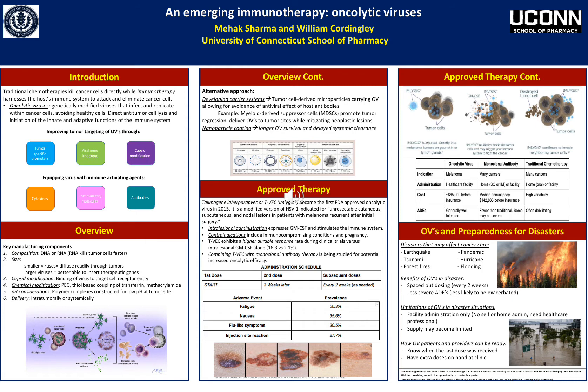Another parameter when creating oncolytic viruses is capsid modification, which helps with the binding of the virus to the target cell receptor entry. We also look at chemical modification, which can be utilized through things like polyethylene glycol, ethyl-based coupling of transferrin, and methacrylamide. We also look into pH considerations, since the polymer complexes are constructed for lower pHs at the tumor site so they can target the tumor versus healthier cells. Delivery can be done intratumorally or systemically.